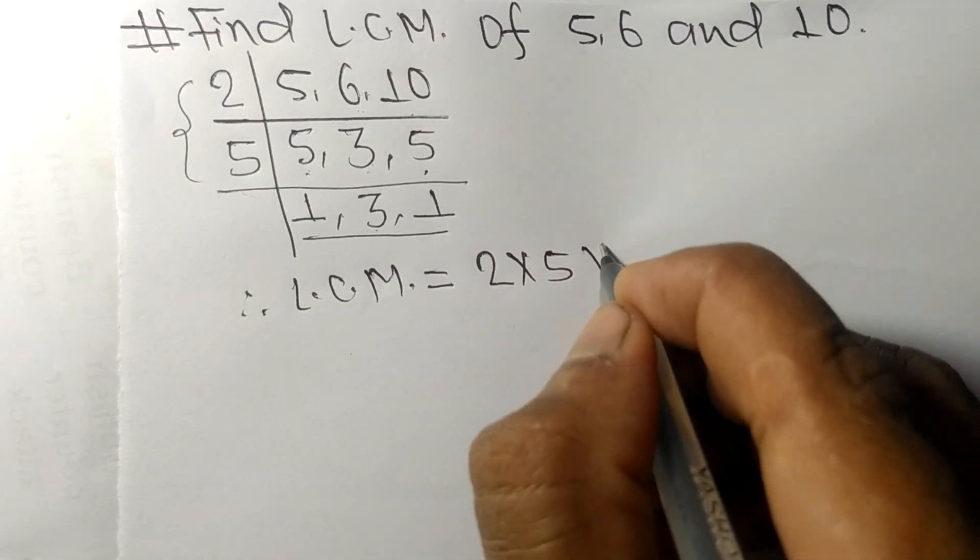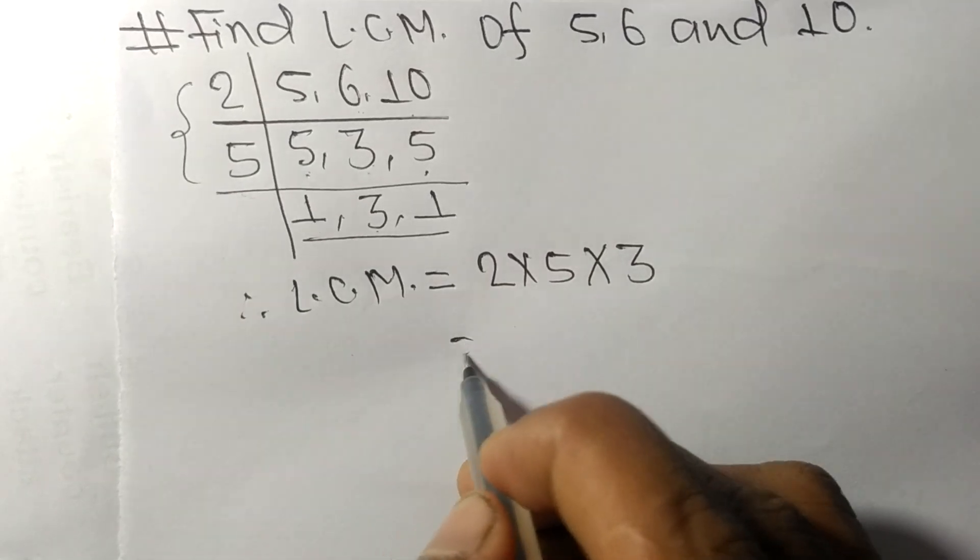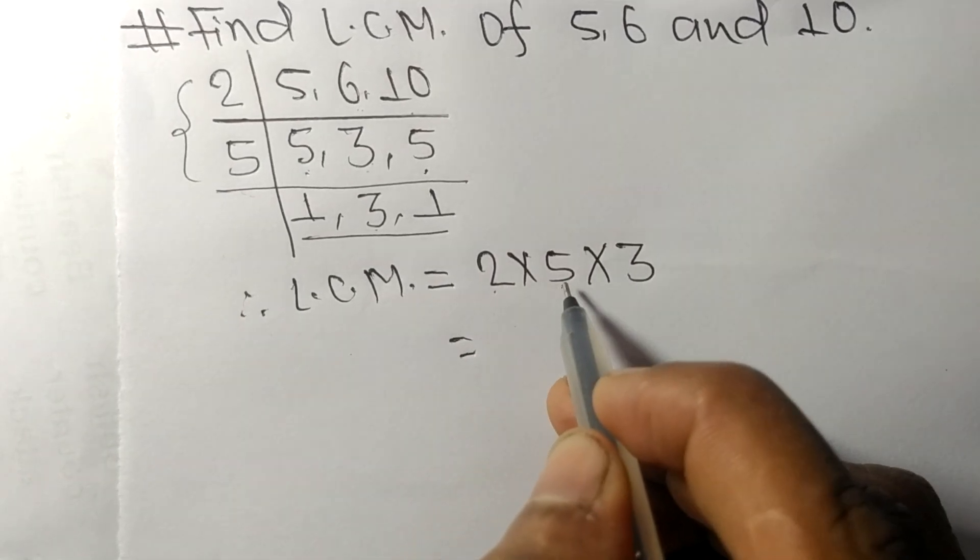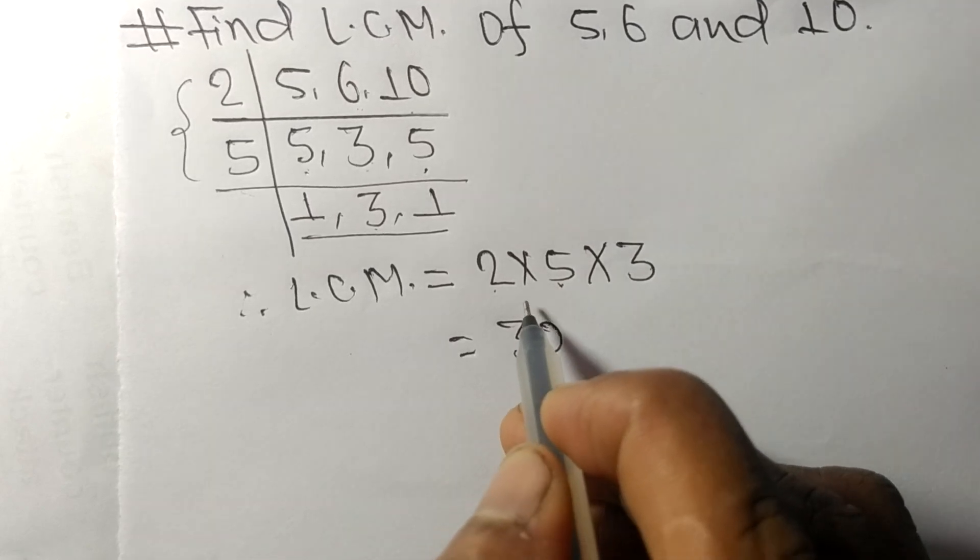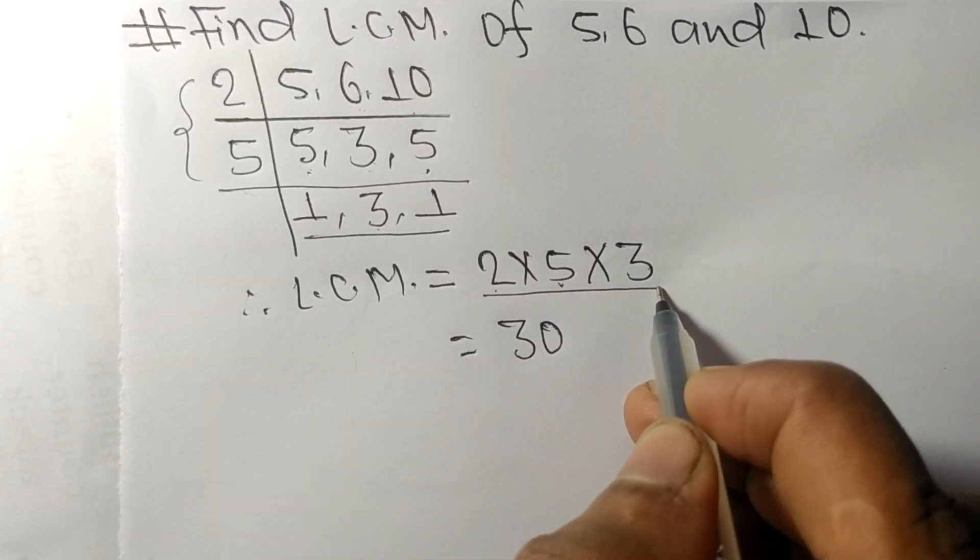3. So 2 times 5 mean 10, 10 times 3 mean it is 30. So by multiplying all these numbers